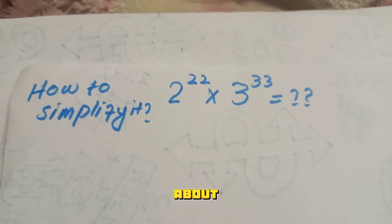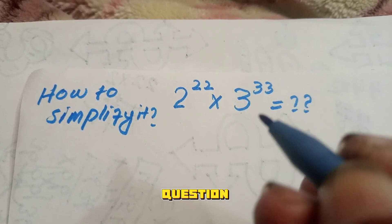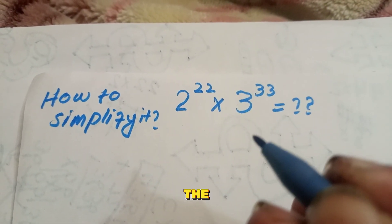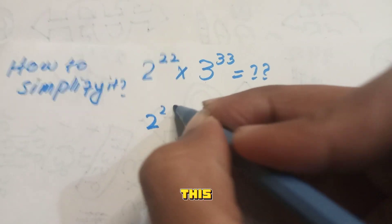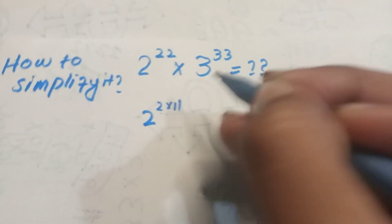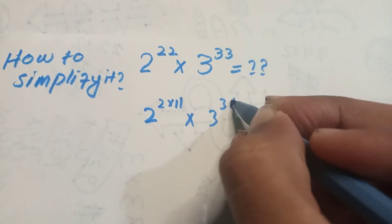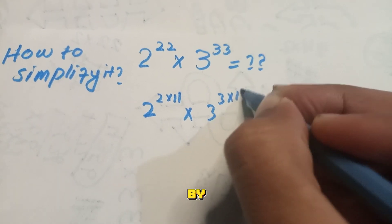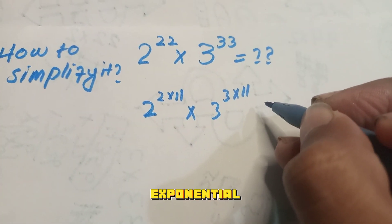Interested people can learn about it, so how can we simplify this question? Just watch the video. So we can write this as 2^(2²) times 3^(3³). This is an exponential equation.